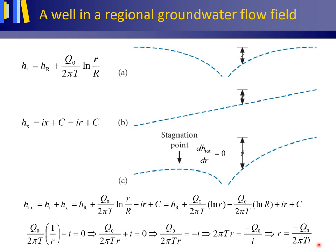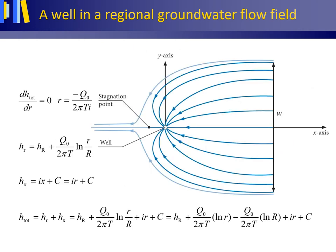Do not learn equation 3.102 by heart. Instead, you need to be able to deduce this equation by reproducing what has just been explained. This figure shows the plan view of the streamlines to a pumping well in a regional groundwater flow field (dark blue) and the regional groundwater flow field (light blue). Note the position of the stagnation point — stagnation is not limited to this point, but there is a stagnation curve in between the regional groundwater flow and the groundwater flow to the well.